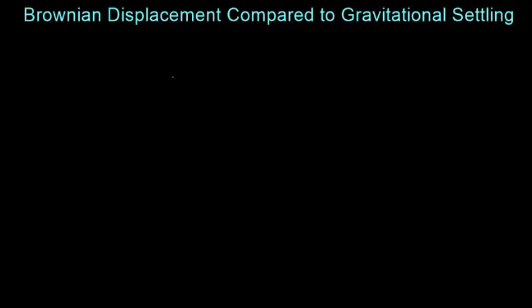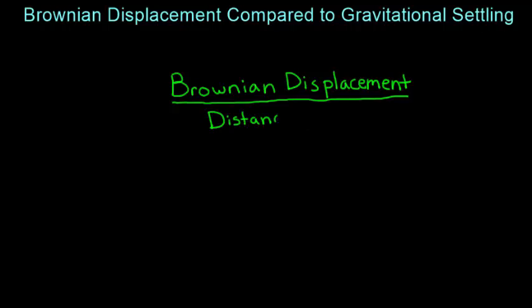Have learners calculate the ratio between Brownian displacement and the distance settled due to gravity for each particle diameter. This can be achieved by dividing the Brownian displacement in one minute by the distance fallen in one minute.